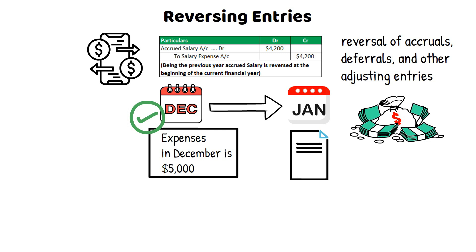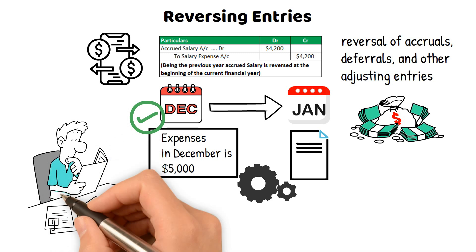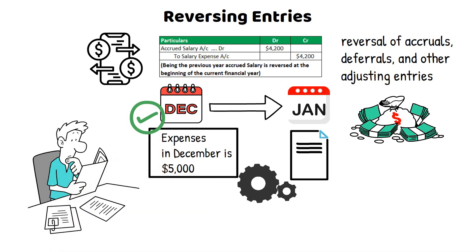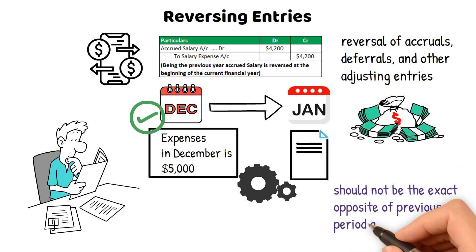Reversing entries are typically made automatically by accounting software, but the accountant can manually enter them. It is essential to carefully review and understand the impact of reversing entries to ensure they are accurate and appropriate for the accounting period. Reversing entries should be the exact opposite of the previous period's adjusting entries.